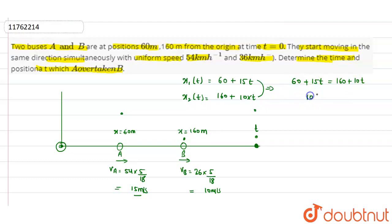So 10T minus 15T equals 60 minus 160, which gives 5T equals 100. After simplifying, the value of T is 10 seconds. This will be the final answer. Thank you.